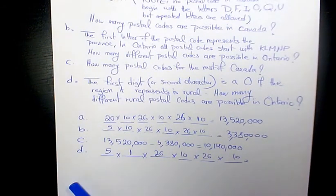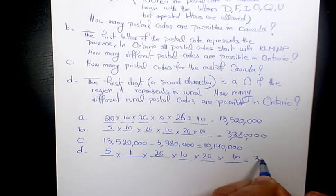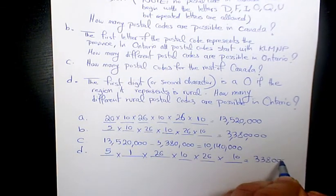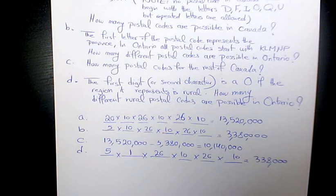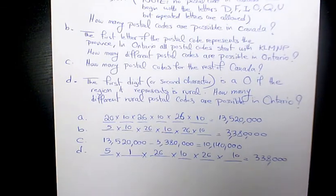So five times 26 times 10 times 26 times 10. That will be 338,000 possible rural postal codes in Ontario.